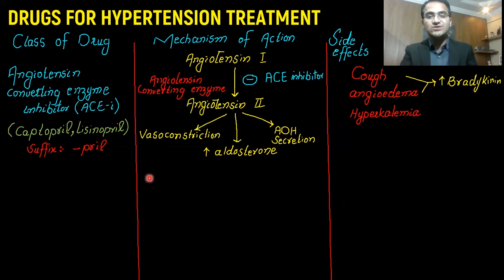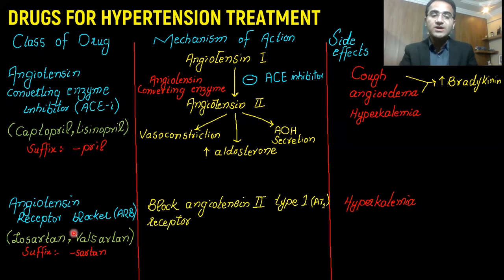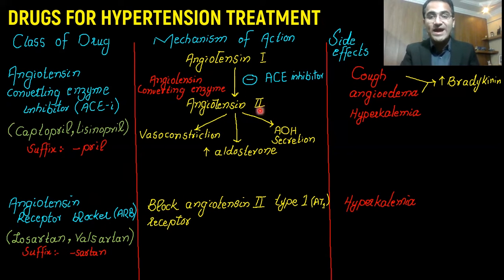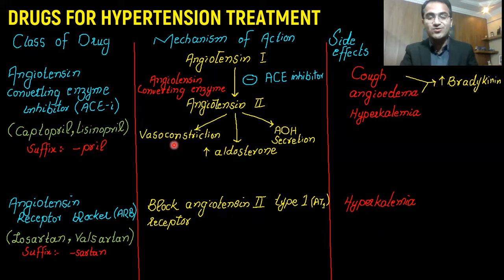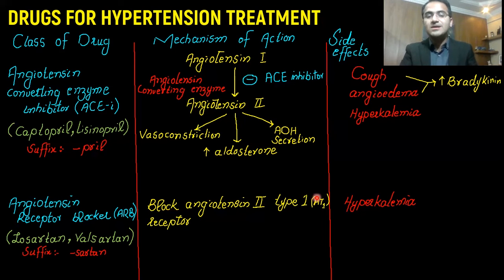Next are angiotensin receptor blockers, or ARBs, which include losartan and valsartan — all drugs ending with the suffix 'sartan.' They block the action of angiotensin 2 at the receptor level, specifically preventing it from binding to its AT1 receptor that causes vasoconstriction. When angiotensin 2 cannot bind to AT1 receptors, there is no vasoconstriction, vessels are dilated, and blood pressure is lowered. ARBs also have the side effect of hyperkalemia.